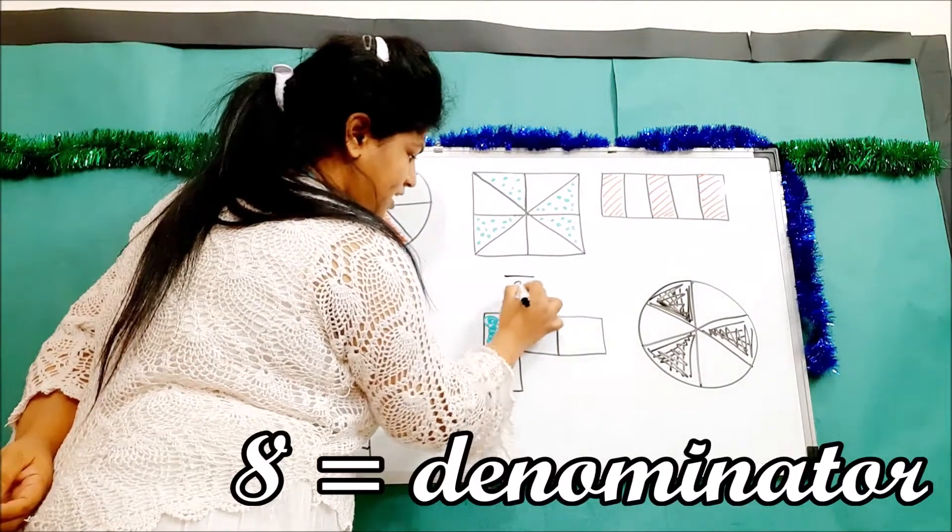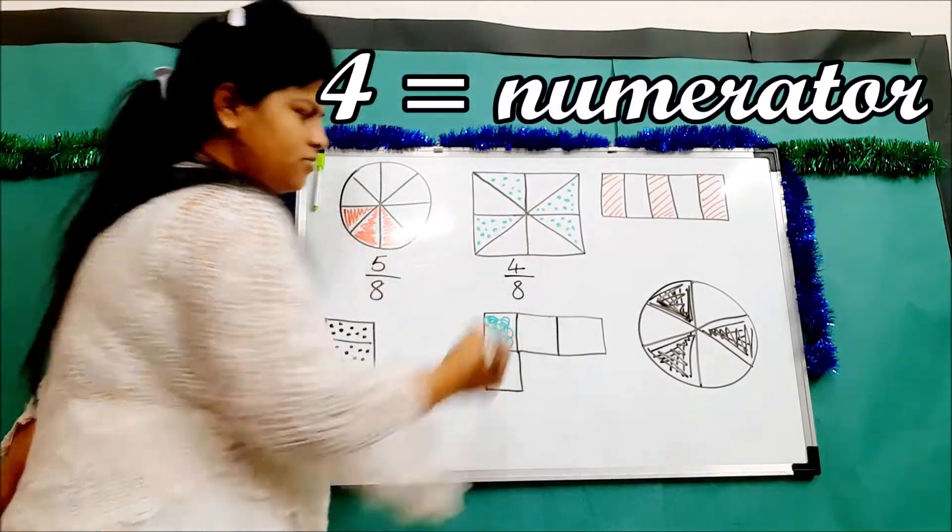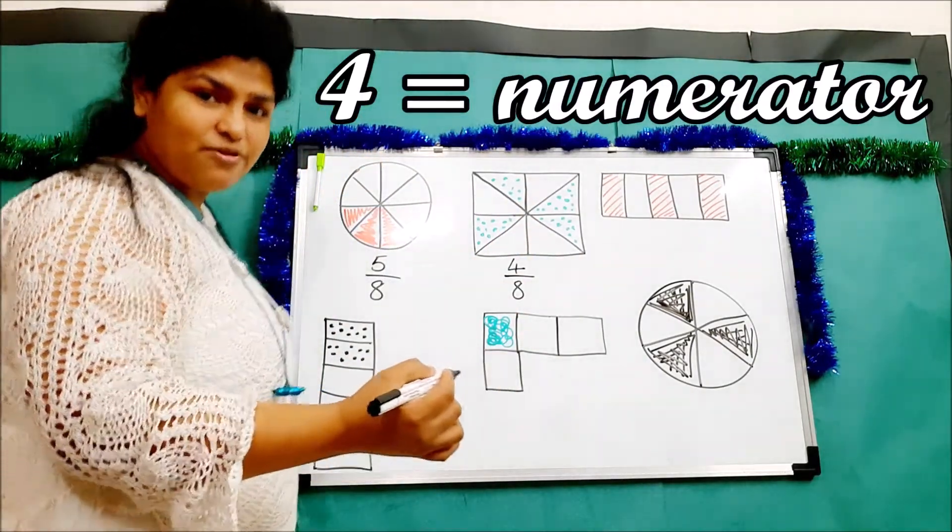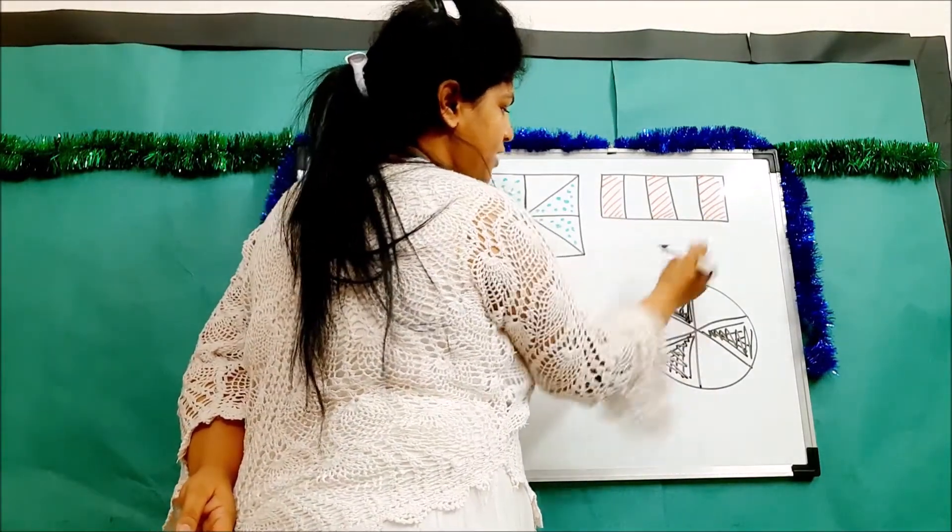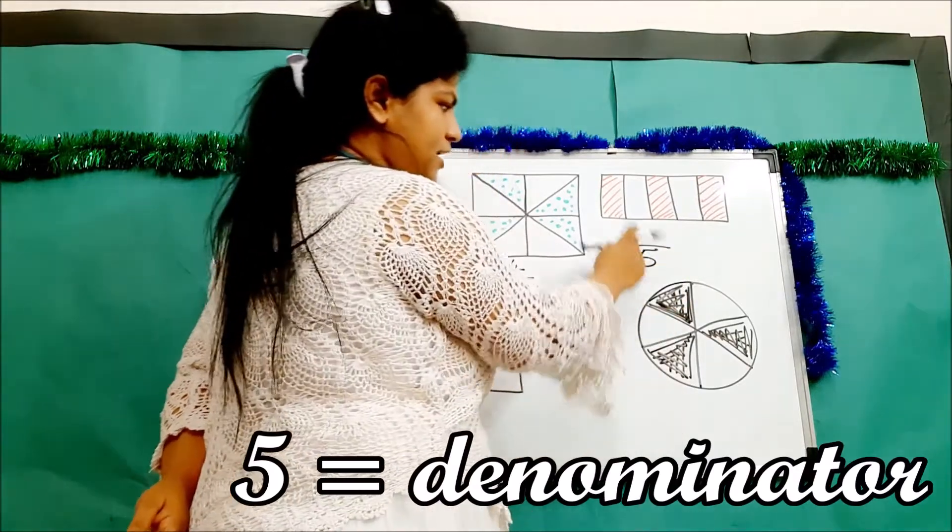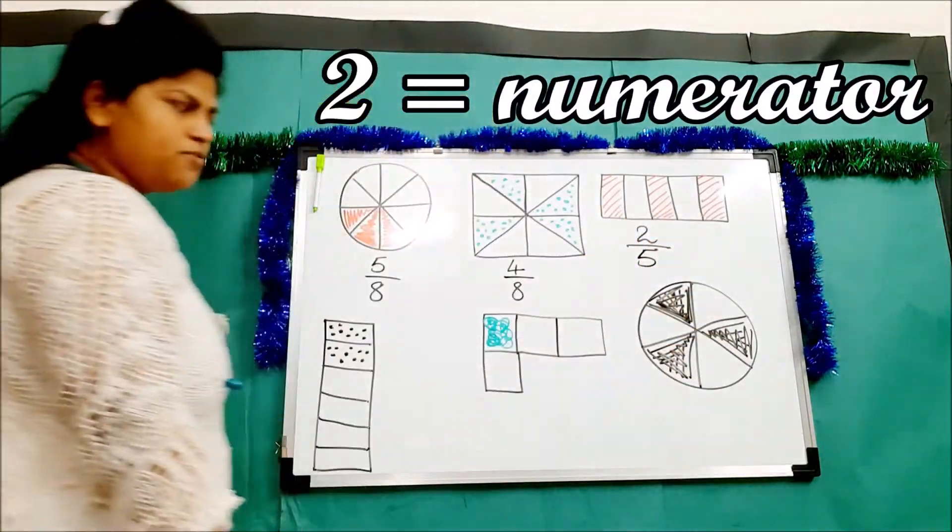Next, here also we have eight. Out of that one, two, three, four - four is not shaded, so that fraction will be four upon eight. Here we have one, two, three, four, five - so five is the denominator and the numerator is one, two - two is unshaded out of five.